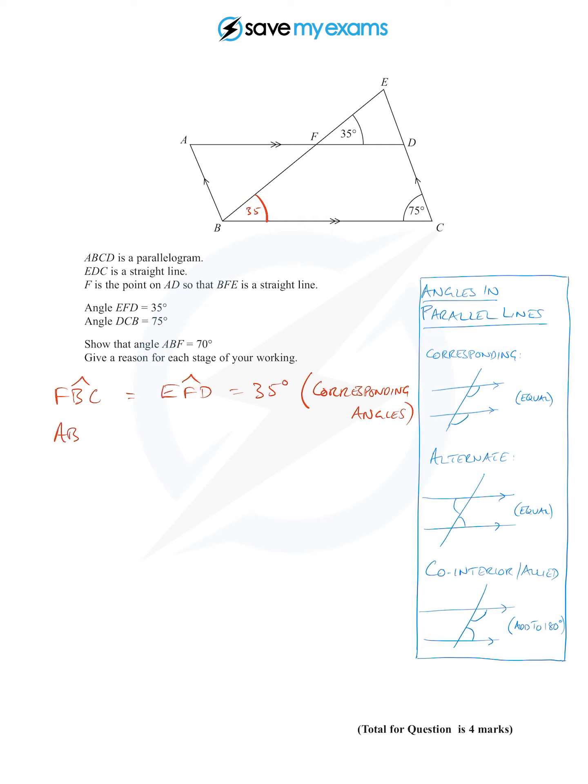So we can say that ABC is 180 minus BCD, or DCB as they've called it. So that's 180 minus 75 which is 105 degrees. So we now know that. Let's put it in a different color. This angle here is 105 degrees.